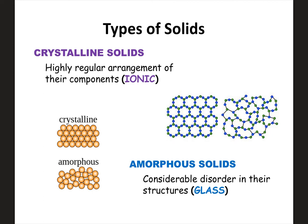This video is going to be pretty short. We're just going to go through the different types of solids, then look more specifically at alloys and go a little bit further than we did before. So there are two types of solids: crystalline solids and amorphous solids.